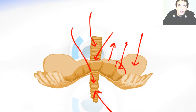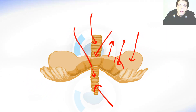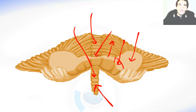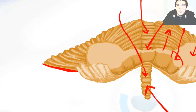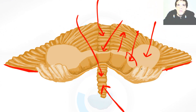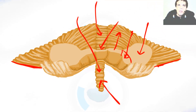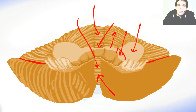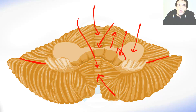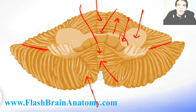Now beside the vermis, there are also two hemispheres — the left one and the right one. These are the parts of the hemispheres above the horizontal fissure. This over here would be the horizontal fissure. We also have parts of the hemisphere below the horizontal fissure. On these parts of the hemisphere we can notice the tonsilla here and the vallecula over here. This border over here was called the pyramid of the vermis, and the lateral borders are the tonsilla of the cerebellum.